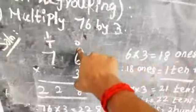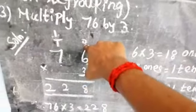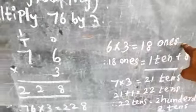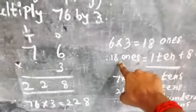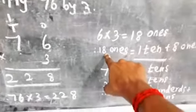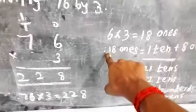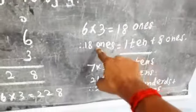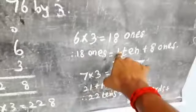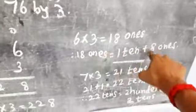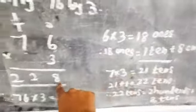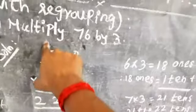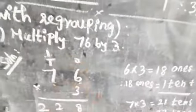Six threes are eighteen. We are multiplying the ones place, so eighteen ones. How many ones are there? Eight ones. How many tens? One ten. That is why eighteen ones equals one ten and eight ones. Write eight in the ones place and carry one over to the tens place.